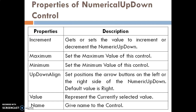These are the common properties of Numerical Up-Down control. The first property is Increment — it is used to get or set the value to increment or decrement the control. The second property is Maximum — it sets the maximum value. The next property is Minimum — it sets the minimum value. The next property is UpDownAlign — it sets the position of the arrow buttons on the left or right side; the default is right. The next property is Value — it represents the currently selected value. The last property is Name — used to give the name to this control.